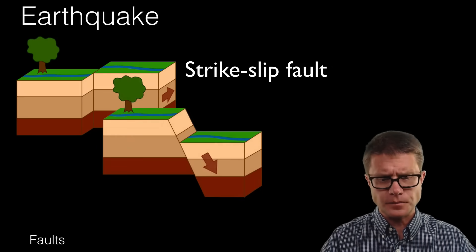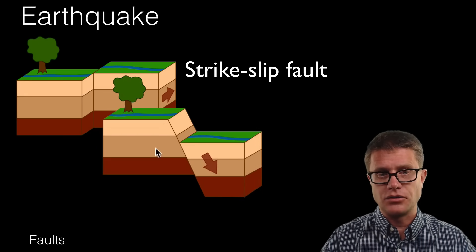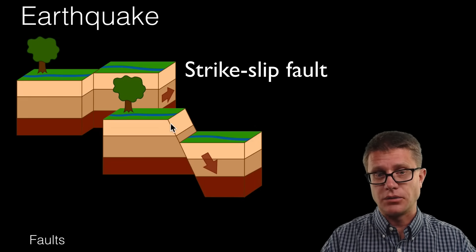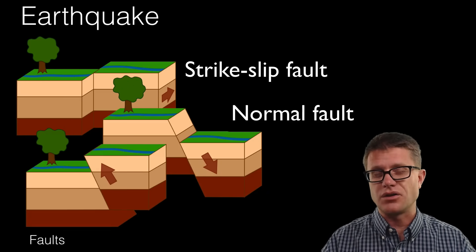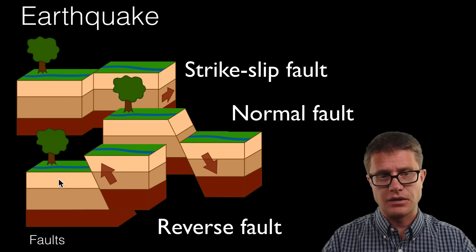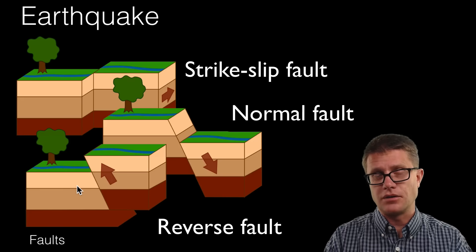We could also have a divergent boundary. So these two are moving away from each other. And so we have what is called a normal fault. It is slipping down. Or we could have a reverse or thrust fault when we have a convergent between these two areas on either side of the fault.